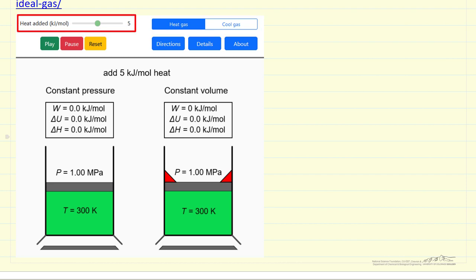And the amount of heat we added is indicated here. The main part here is that we're comparing how much work is done, what's ΔU and what's ΔH for the same amount of heat added to these two processes. So let's look at the simulation.